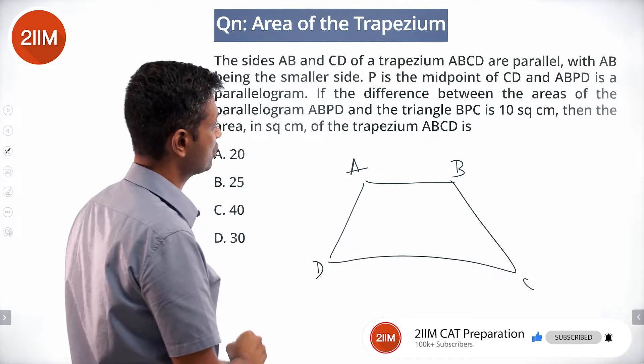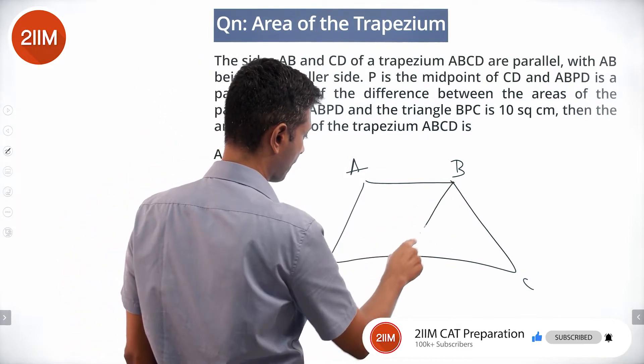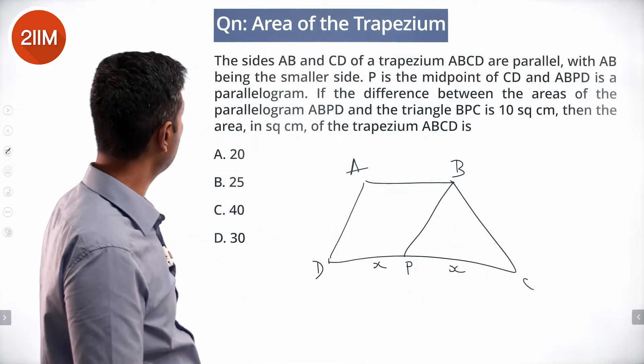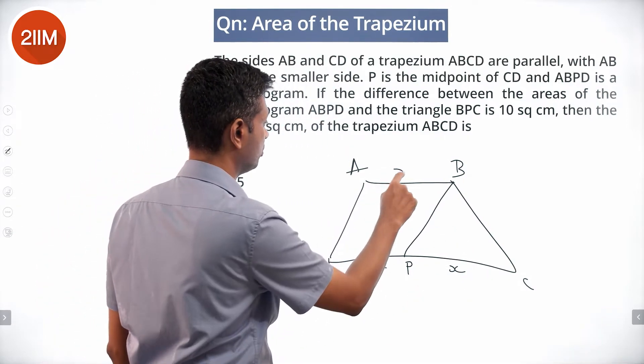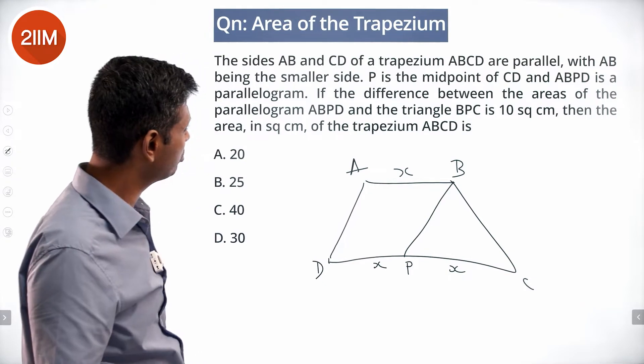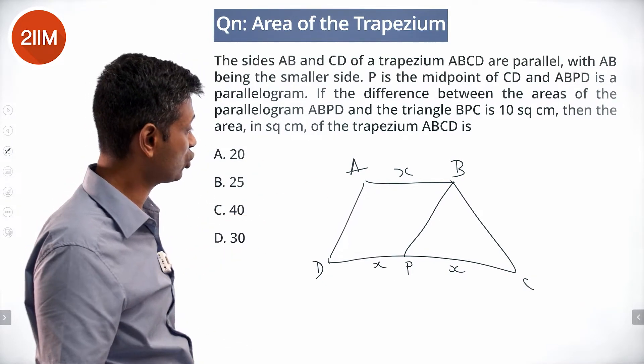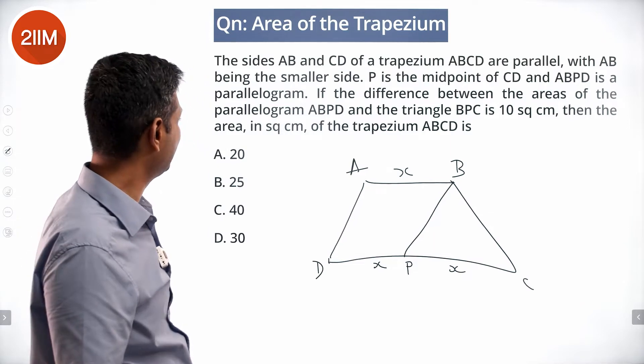P is the midpoint of CD, and ABPD is a parallelogram. The difference between the area of parallelogram ABPD and triangle BPC is 10 square centimeters. The question asks for the area in square centimeters of trapezium ABCD.